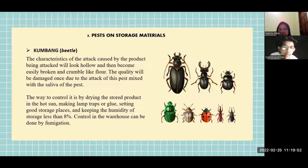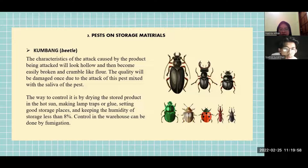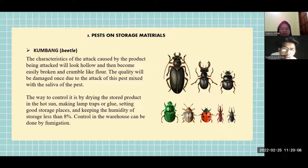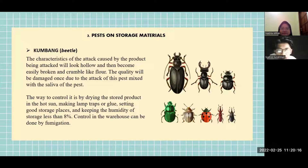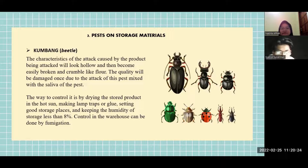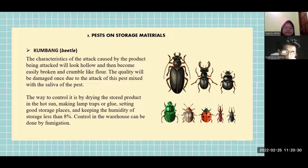Kumbang Orbital. The characteristics of the attack are that the product being attacked will look hollow and become finely broken and crumbled like flour. The quality will be damaged due to the attack and mixing with the saliva of the pest. Control methods include drying stored products in the hot sun, making lamp traps or glue traps, maintaining good storage conditions, keeping storage humidity below 8%, and fumigation in the warehouse.